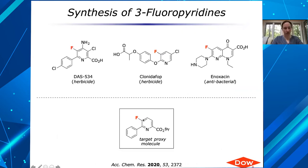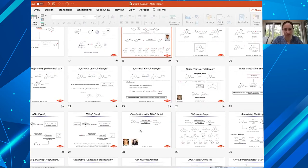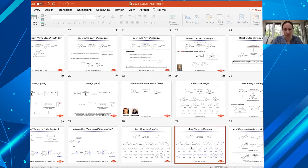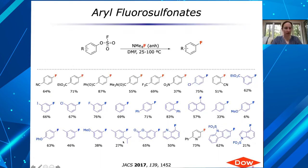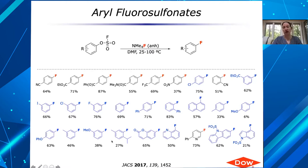That is a great question. Let me look at the substrates. You can see some pretty sterically hindered substrates here — for example, this substrate is pretty hindered with an ortho isopropyl group and also very electron rich, and it works okay. Interestingly, the ortho phenyl actually works better than the para phenyl, so that's another comparison of sterics.